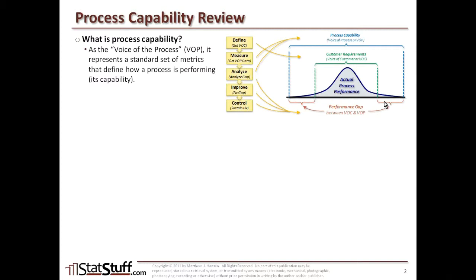The gaps between how we're actually performing and what the customer wants are performance gaps, which reflect opportunities for improvement. We use data in the analyze phase to figure out why we're not performing right and identify fixes to reduce those gaps — to minimize the distance between how we're actually performing and what the customer wants. Once we've got the improvements, we put controls in place to sustain those fixes. This is how we follow through the entire DMAIC methodology.